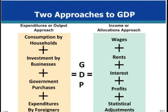On the right, the income approach uses different inputs: one, wages; two, rents; three, interest; four, profits; and five, statistical adjustments. Each of these items will be further discussed next.